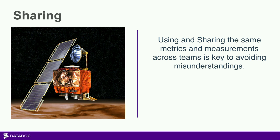With the Mars Climate Orbiter story, we had NASA engineers and Lockheed Martin using different systems of measure — one team using customary, the other using metric. When you don't convert your units, things crash into planets and waste millions, if not billions of dollars. Today we're here about monitoring, and what we bring you is a set of tools you can pour your culture and automation on to get that metrics and sharing.